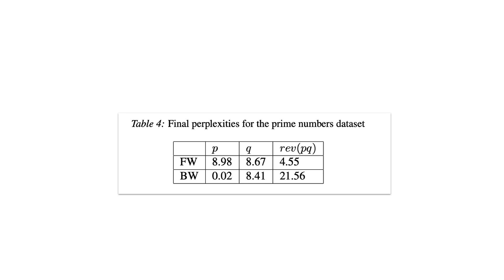The larger the perplexity, the more uncertain the model is about a given choice. In the forwards direction, after choosing p and q, if the model was optimal, it would get zero perplexity for the product, since multiplication is completely deterministic. It doesn't quite get there, achieving 4.55 perplexity instead.